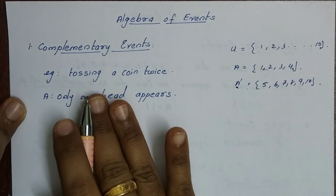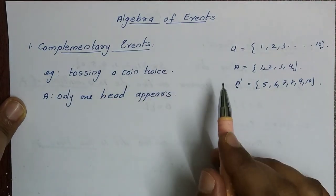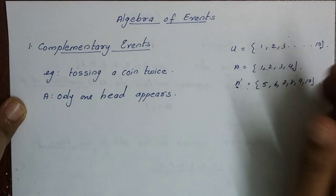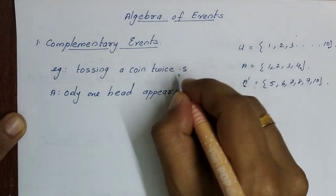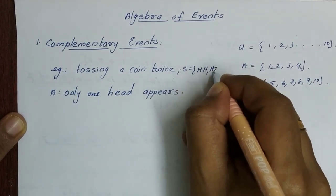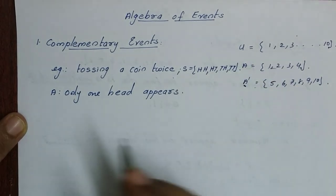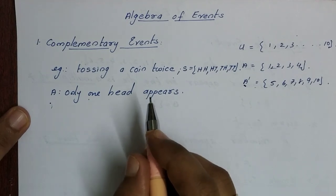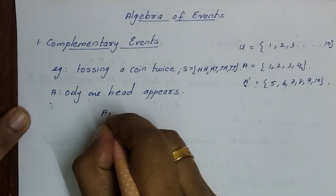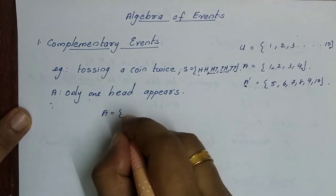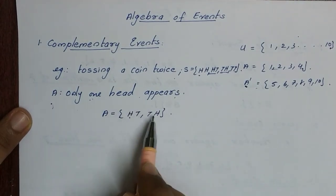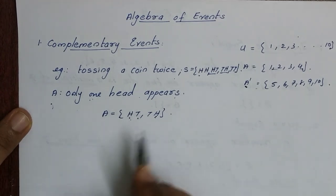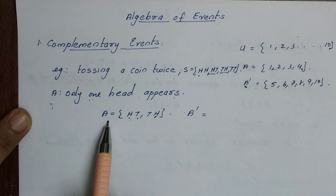For complementary events, tossing a coin twice gives sample space {HH, HT, TH, TT}. If event A: only one head appears, then A equals {HT, TH} — two sample points, one head each. Then A complement contains the remaining sample points. So A complement has {HH, TT} — the elements not in A.